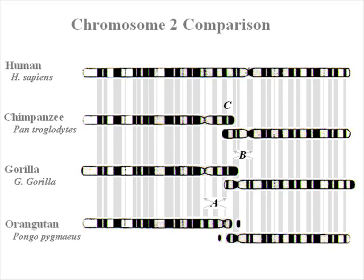There are three major discontinuities, labeled here A, B, and C. Discontinuity C is the chromosomal fusion event that Bonobo Bill so thoroughly covers in his video, so I'm not going to discuss that.